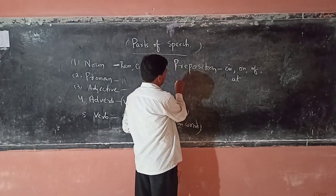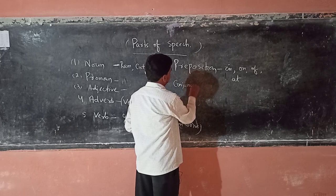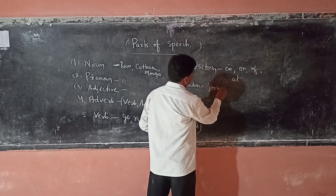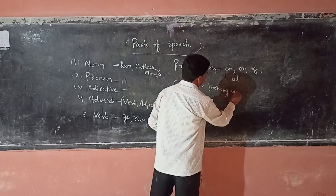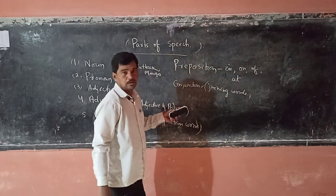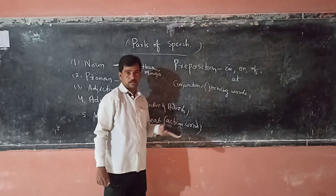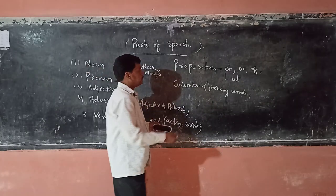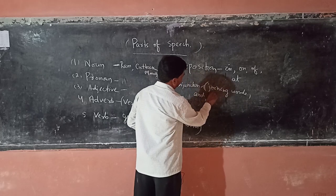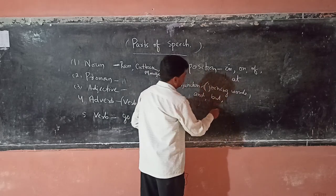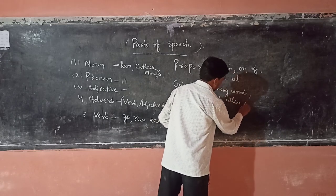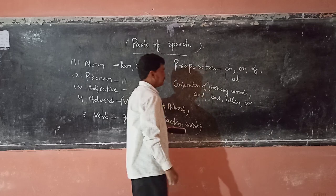Then conjunction — a joining word. It joins noun to noun, and sentence to sentence. Examples of conjunctions are: and, but, when, or.